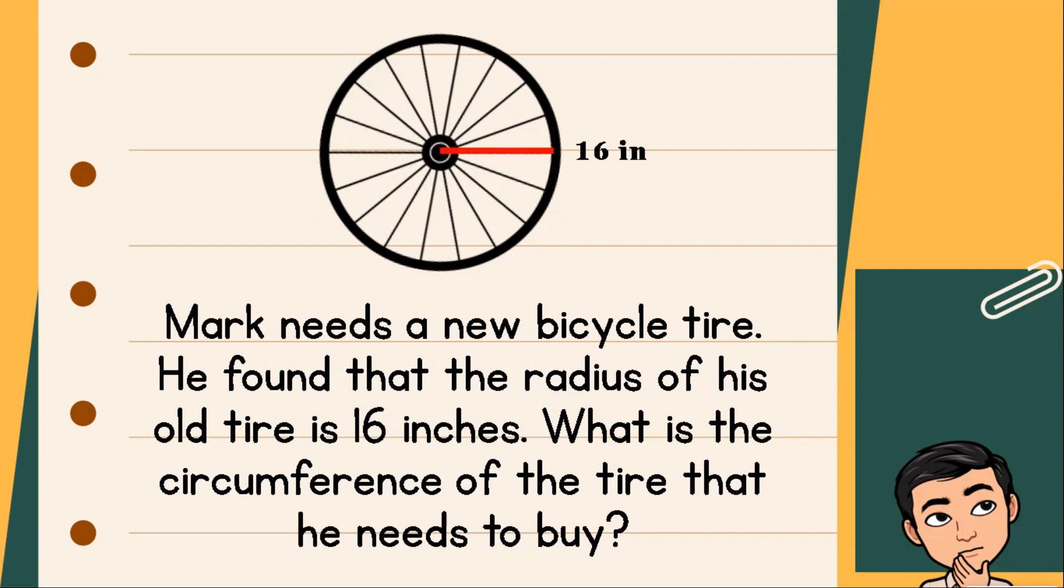Understanding the situation is the first way to solve a word problem, and in this case, to check if someone truly understands this provided situation is for him or her to determine first what is asked. This time, we are asked to find for the circumference of the tire that Mark needs to buy.